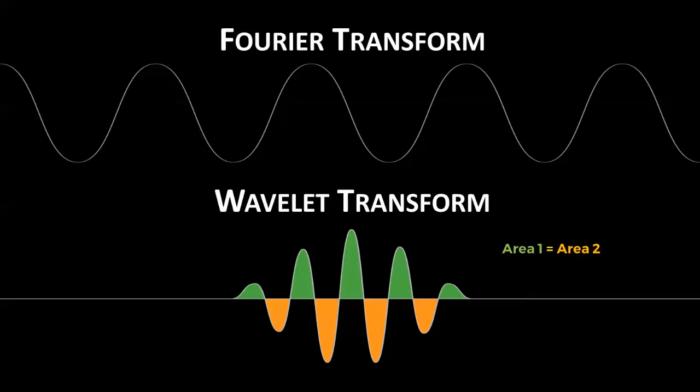If we take a wavelet transform of a straight line, like x equals 1, we expect the result of zero. If the areas were not the same, the wavelet transform of x equals 1 would have a positive or negative value.